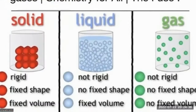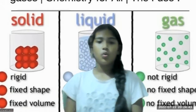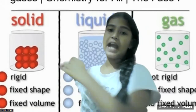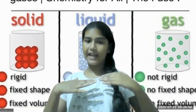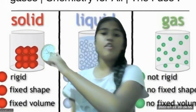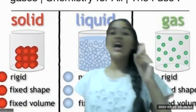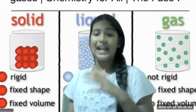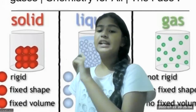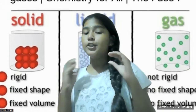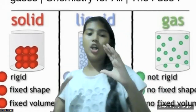Here are the three types of matter. This diagram shows solid on the left, liquid in the middle, and gas on the right. You can see red, blue, and green particles representing molecules and atoms. In solid, all the molecules are packed together, which makes it not compressible.